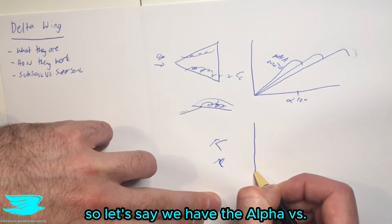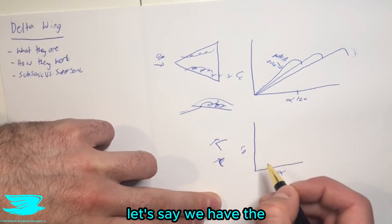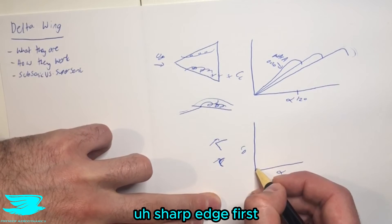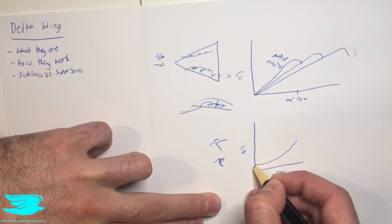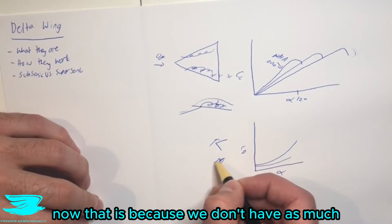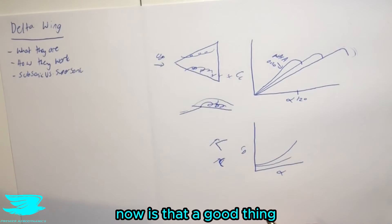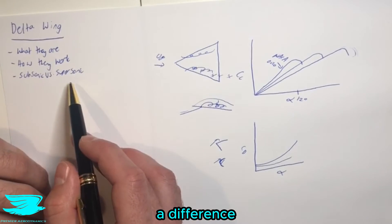If we were to look at the drag coefficient, on the other hand, so let's say we have the alpha versus the drag coefficient, let's say we have the sharp edge first, we'll start to get a fairly high drag coefficient compared to the rounded leading edge, which will be a little bit lower. Now that is because we don't have as much separated flow. Now is that a good thing? Well, for subsonic flow, that is potentially a good thing. But for supersonic flow, this is where we get a difference occurring.